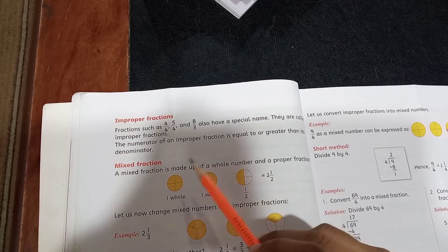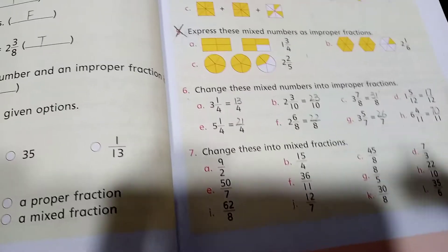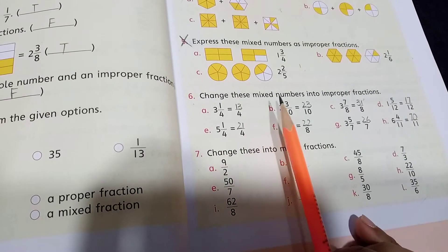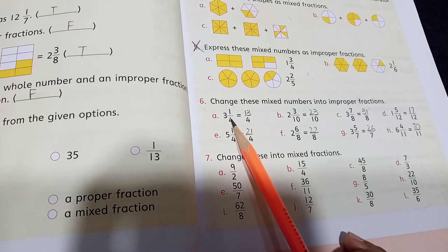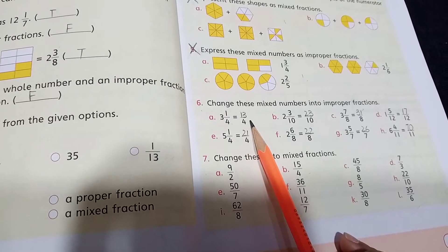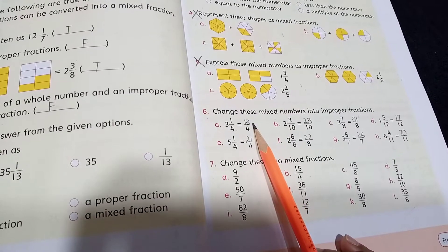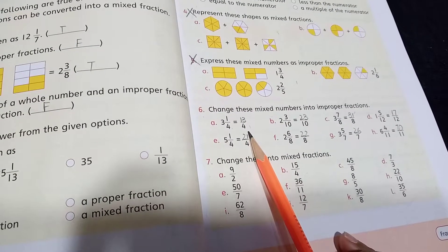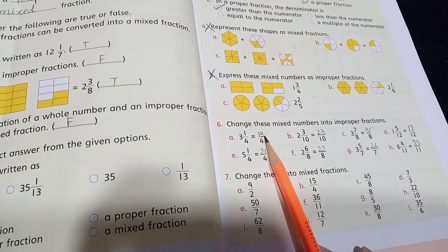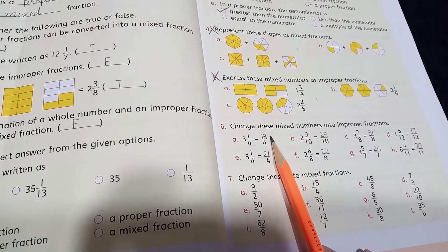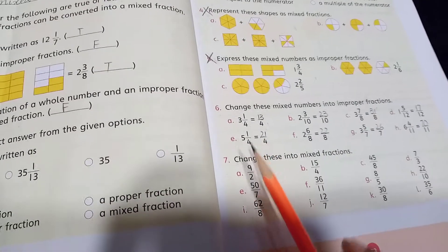Question number 6 is saying basically change this mixed fraction into improper fraction. You know what is improper fraction? The fraction in which numerator is greater than the denominator is called improper fraction. Means if a fraction has its numerator greater than denominator, then it is an improper fraction. Now we will convert mixed fraction into proper fraction.